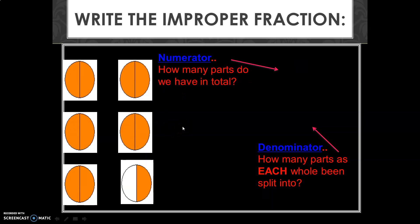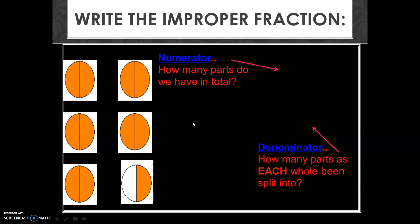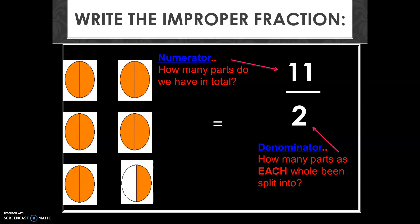Write the improper fraction. We have identical figures split into two pieces each. The shaded pieces are: two, four, six, eight, ten, and eleven. Eleven pieces are shaded, so your numerator is eleven. The denominator — how many parts each whole has been split into — gives us our answer: eleven upon two.